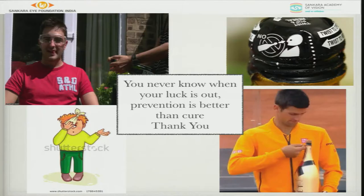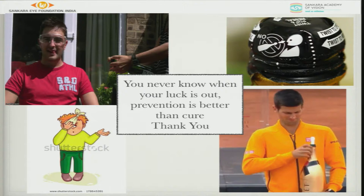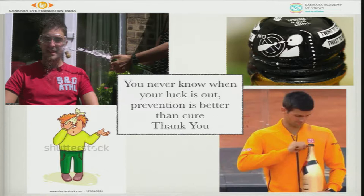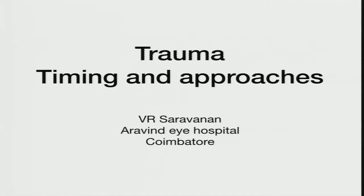Thank you Dr. Devian. To summarize: we need a classification system so everyone speaks the same language — zone one, zone two — to understand the severity of disease. For investigations, clinical and slit-lamp examination are important. Ultrasound is done carefully without pressing on the eye. X-ray is not done as often now. CT scan is preferred, and for non-metallic foreign bodies, MRI can tell us where the foreign body is.